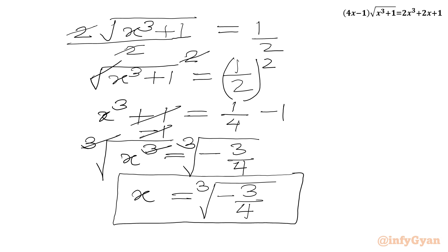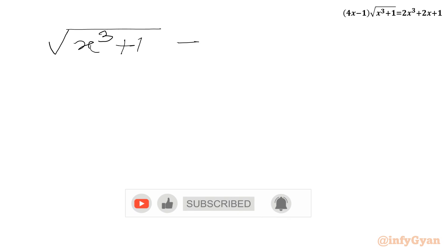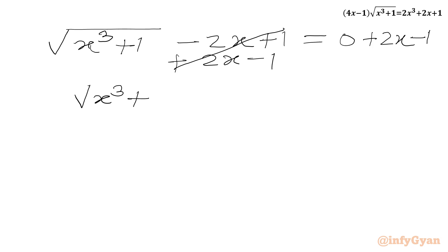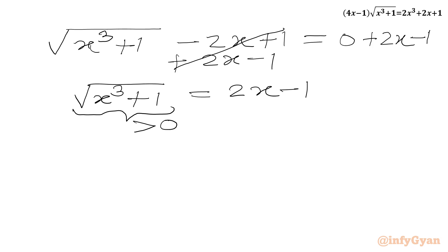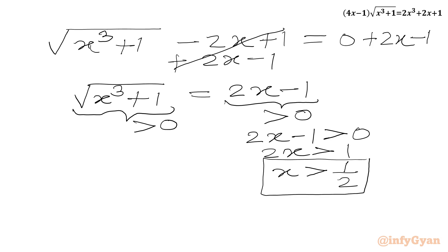Now we solve the second equation: √(x³ + 1) - 2x + 1 = 0. We add 2x - 1 to both sides, so √(x³ + 1) = 2x - 1. Now we can write one condition on x: the LHS is always positive for real x, so RHS must be positive. So 2x - 1 > 0, meaning 2x > 1, so x must be greater than 1/2.